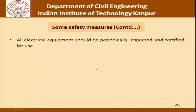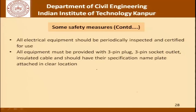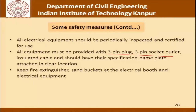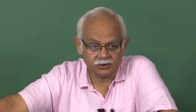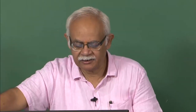All electrical equipment should be periodically inspected and certified for use, which will bring defective equipment to supervisors' attention. All equipment must be provided with a 3-pin plug, 3-pin socket outlet, and insulated cable, with specifications nameplate attached in a clear location. Keep a fire extinguisher and sand buckets at the electrical booth and near electrical equipment. Use spark-proof and flame-proof field distribution boards and use the required PPE. Compliance with these measures will ensure a fair reduction in accidents related to electrical work at construction sites.